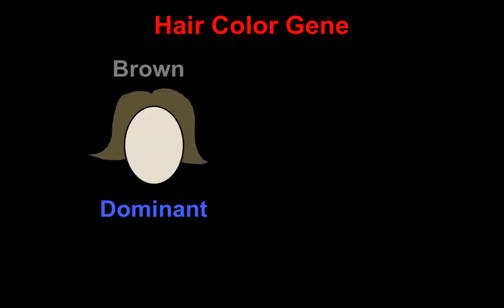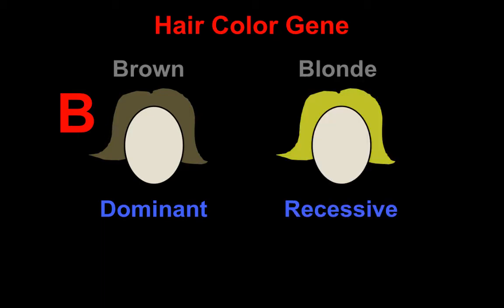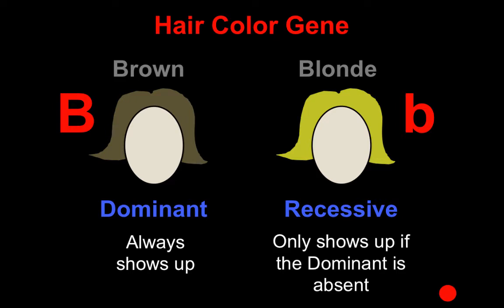Let's look at an example with a hair color gene. There are two alleles: brown, which is dominant and gets a big B, and blonde, which is recessive and gets a little b. The dominant always shows up if it's present, and the recessive only shows up if the dominant is absent. Let's look at how they interact when actually inherited.